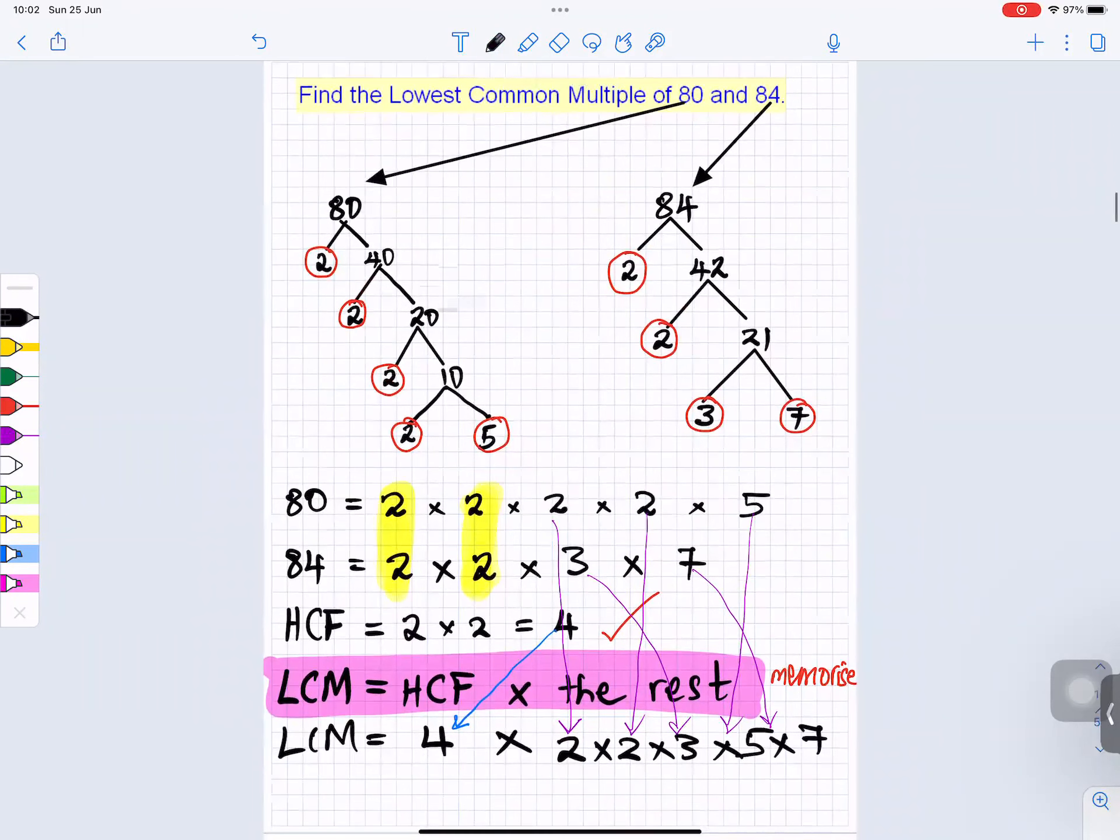This one you don't do it in your head. You put it in a calculator. So in a calculator, four times two—four times two is eight—times two times three times five times seven. That gives you 1680 as the lowest common multiple. So if you copy all of that, then you're going to do an example exactly like that and write yours neatly. Presentation is very important.